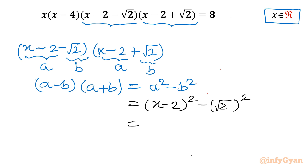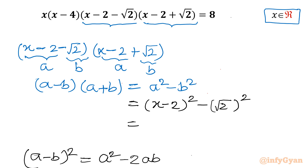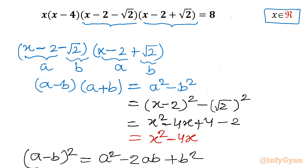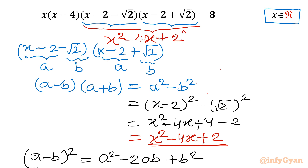Applying the (a minus b)² identity — a² minus 2ab plus b² — we get x² minus 4x plus 4 minus 2, which simplifies to x² minus 4x plus 2. So in place of those two brackets we can write x² minus 4x plus 2. And x times (x minus 4) gives us x² minus 4x.